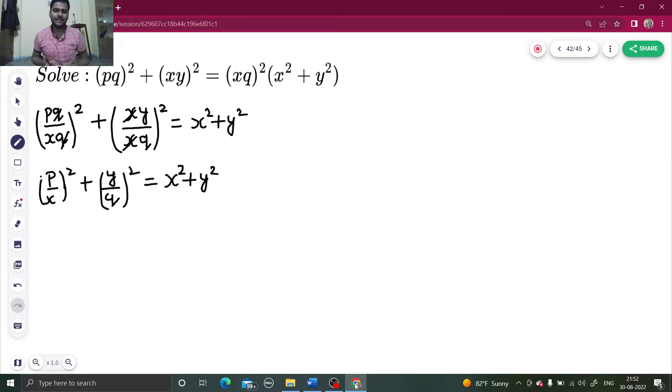But anyhow, I'm getting a hint that I will have to simplify it more in order to get that form—function of P and X on one side and function of Q and Y on the other side. I can do that because this is P squared by X squared, and if I take this X squared to the other side, minus X squared equals Y squared minus Y squared divided by Q squared. Let's take both of them equal to A.